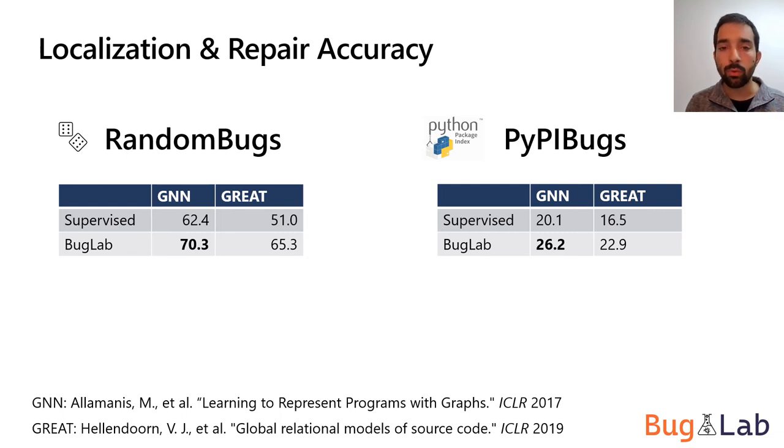At the same time, we observe that the performance on real-life PyPy bugs is much worse compared to random bugs, suggesting ample opportunity to improve in the future. You can see in the random bugs case, we have a localization and repair accuracy of around 70%, but on the PyPy bugs, the real bugs, we have just 26%.